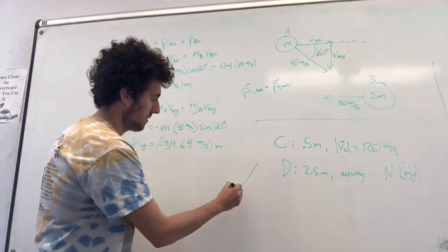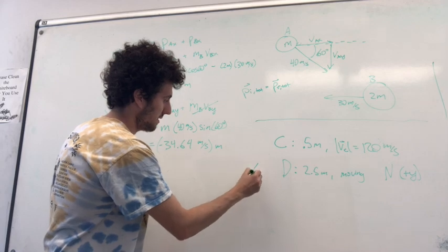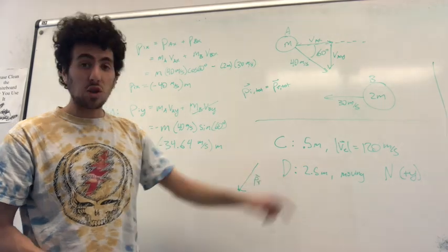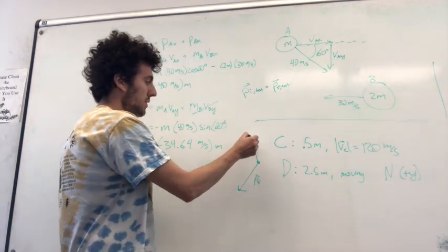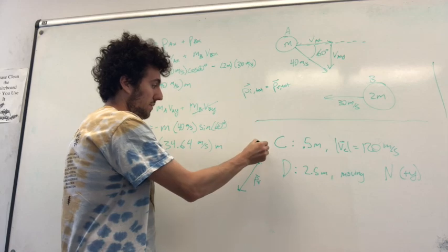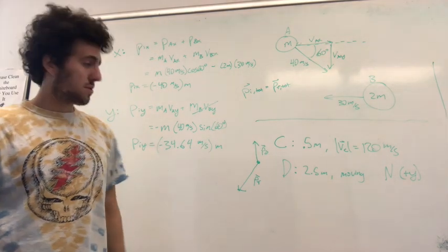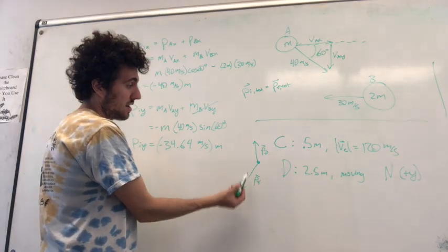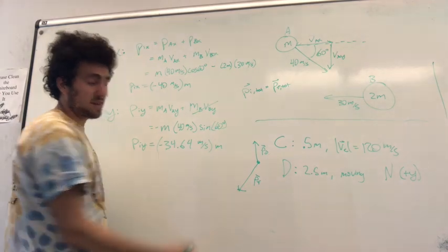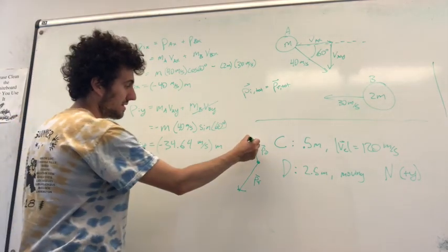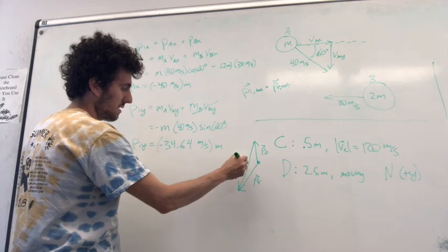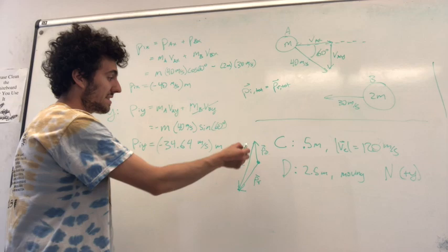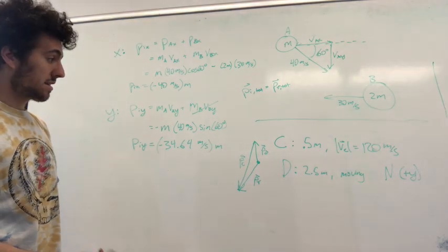So here's my P final. We know that because it's equal to P initial. We're also told that the asteroid D is moving north. So we know PD, we don't know the magnitude of this arrow, but we know it is pointing north. So this is one of the momenta, and then PD plus PC has to add up to this final. In other words, PC has to be this vector here, pointing down and to the left. So PC has a negative x and a negative y component.